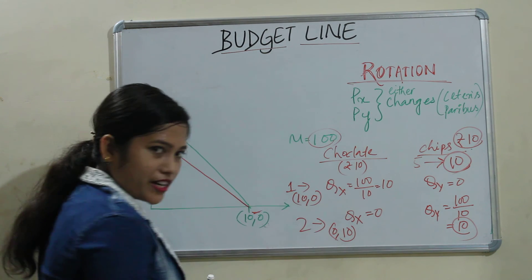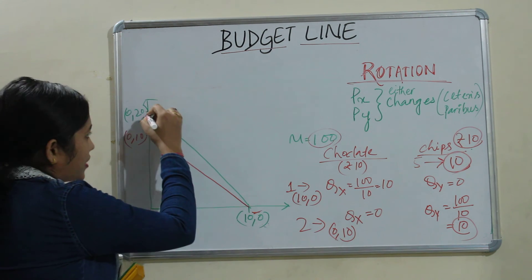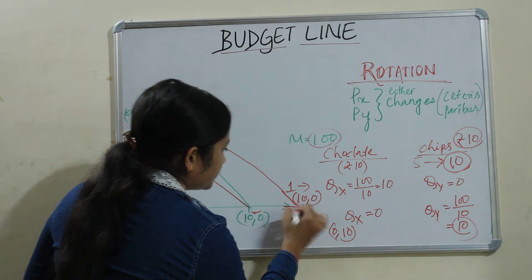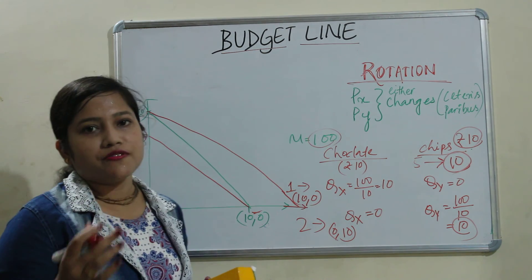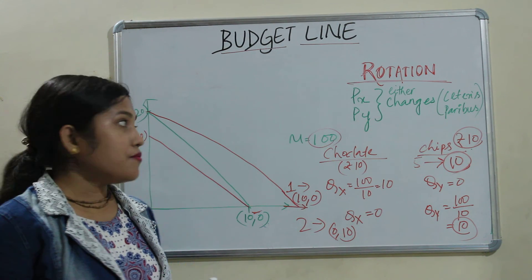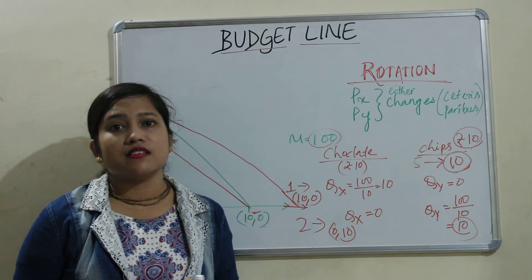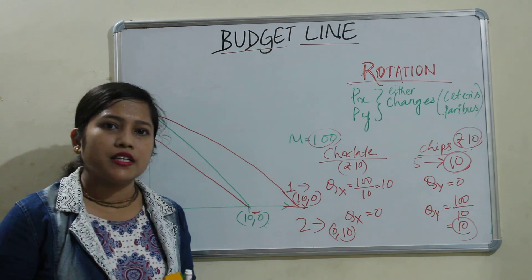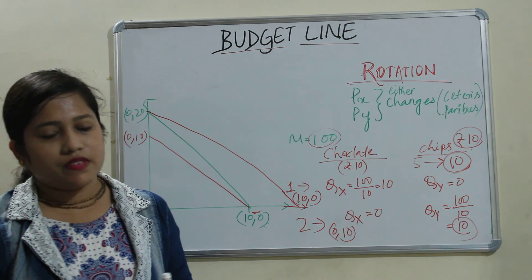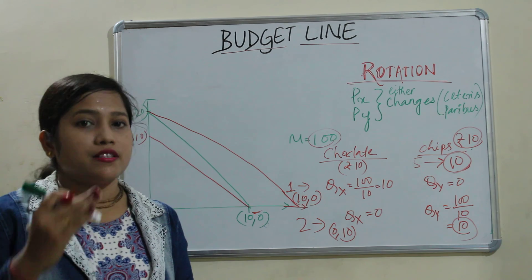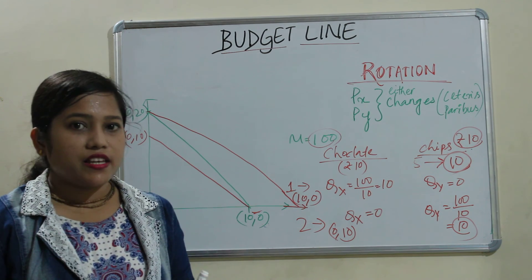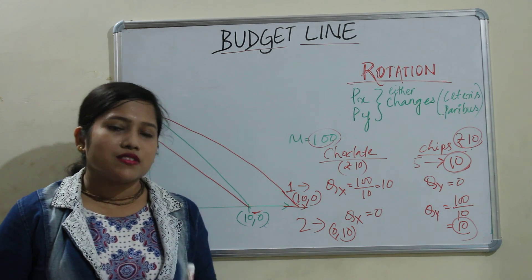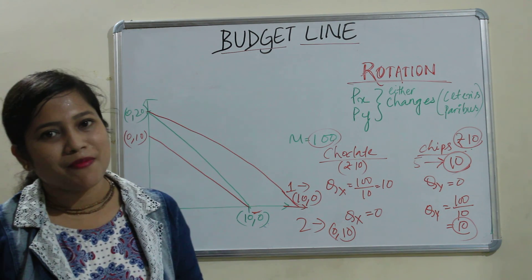Similarly, if the price of chocolate changes, the budget line may rotate the other way. So this is all about shift and rotation in the budget line. In the next video we will study how the budget line and indifference curve come together to produce consumer equilibrium. If you want to follow along, stay with my channel, and don't forget to like and subscribe. Thank you.